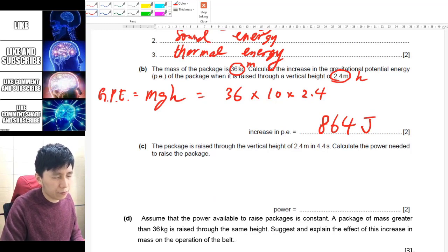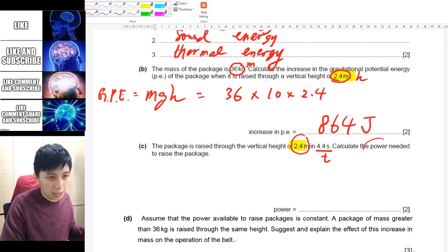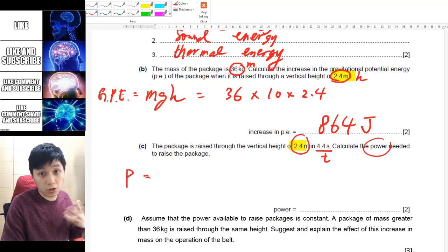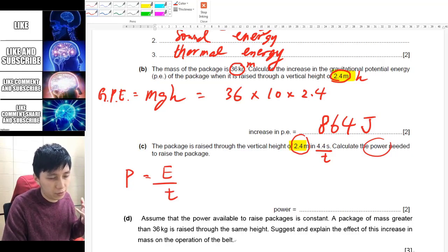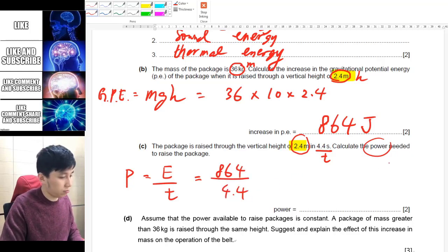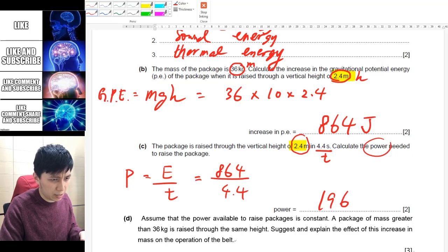Part c, it said the package is raised through the vertical height 2.4, which is the same as the previous, so nothing new, except they tell you the new information that is the time, it takes is 4.4 seconds. So asking you to calculate the power, so first thing you do, of course, is to recall the equation of power, that is E over t. And you have the E, which is from the previous question, you have the t, and so for sure that you can calculate the answer, and that is 864 over t, which is 4.4. And then calculator again, and you get 196 point something, so I'll keep it as, I think 2 to 3 significant figures would be good, so I'll take it as 3, so 196 joule, wait not joule, joule per second, or you can say watt.